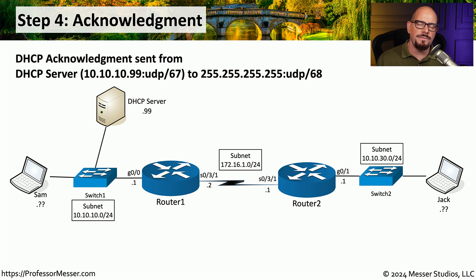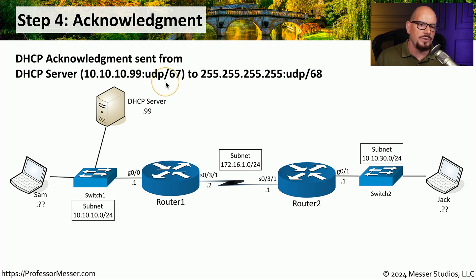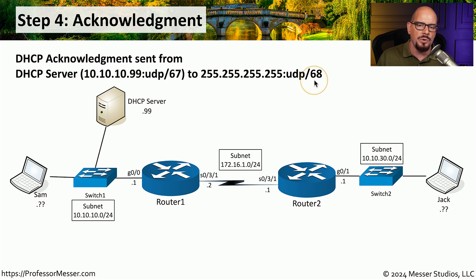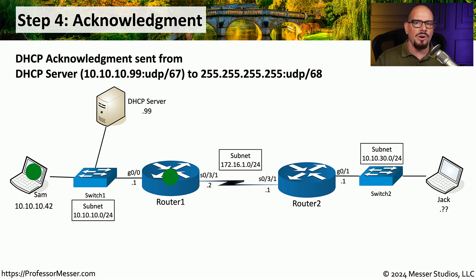The last step is step four, the Acknowledgement. This is sent from the DHCP server back to the device acknowledging that it has received the request. The acknowledgement is sent from the DHCP server — in this case 10.10.10.99 — with a source port number of UDP port 67, sent to a broadcast address of 255.255.255.255, with a destination port number of UDP port 68. This goes to all devices on the subnet, but obviously the only device waiting for that acknowledgement is Sam's. Now that Sam's laptop has received the acknowledgement, it can configure all of the IP settings automatically.